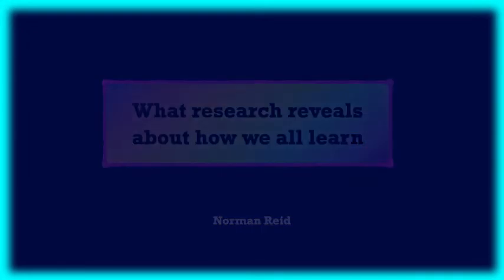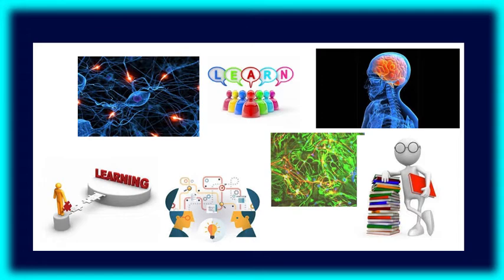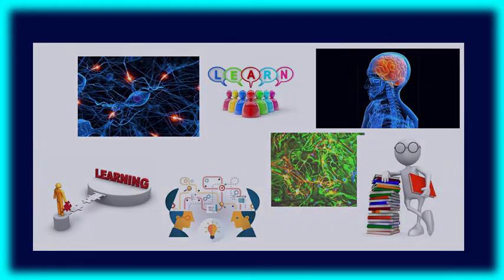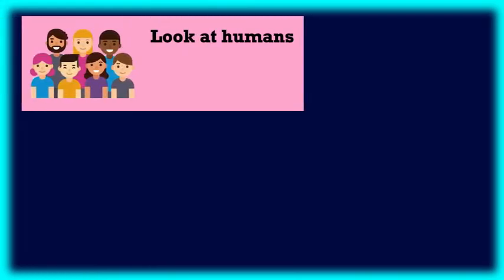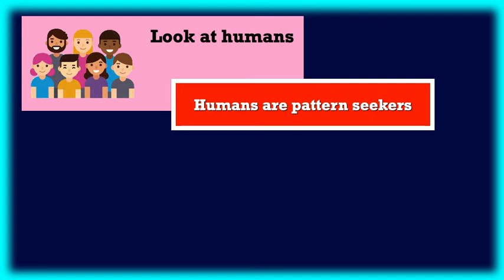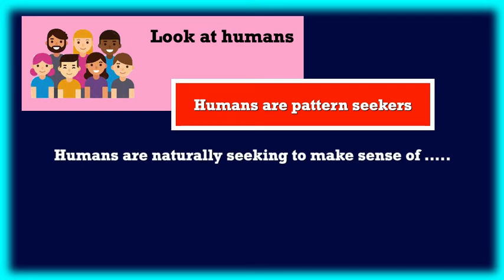What does research reveal about how we all learn? The problem is we start with this word learn or learning and it brings up all kinds of pictures in our mind. What do we actually mean by learning? It seems such a straightforward question. I want to start with this by looking at human beings of all shapes and sizes. That's the one thing that's true about us all. We're looking at things around us and we're looking for patterns, things that make sense to us and make sense of life. If you like, human beings are naturally seeking to make sense of things like the world around. How does it work? Why does it do things the way it does things?